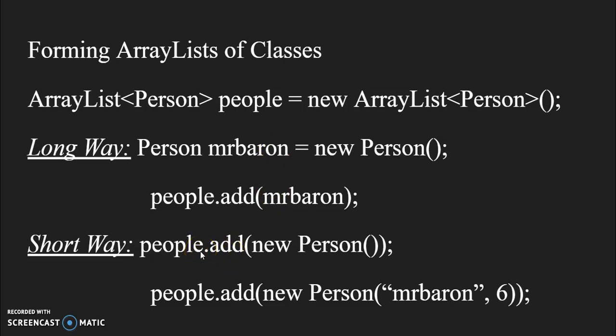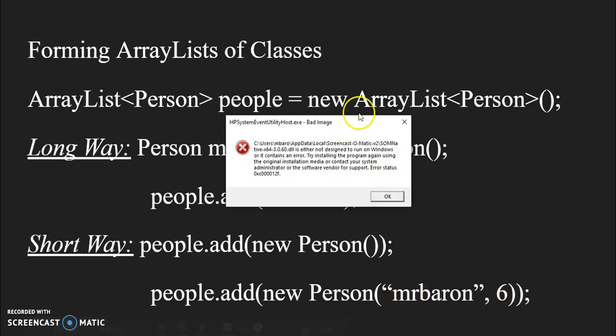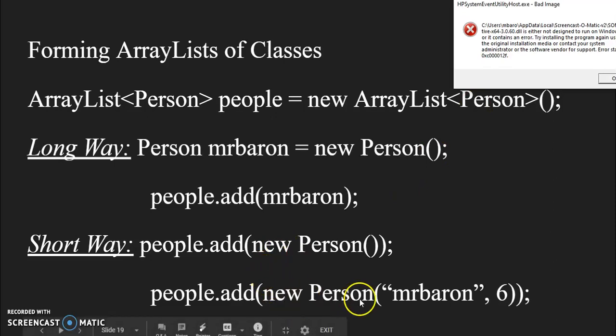The other way to do this is to create an object of that particular class inside of that add method. You can actually call the second half of the constructor inside of the add method just to add in a new person into this value. With a default constructor, you can say people dot add new person. That'll make a new one. Maybe if you just wanted to start out by initializing ArrayList of persons, you could say people dot add new person. If you have a constructor, say that takes two arguments, like Mr. Barron for name and six for height, you can actually put those inside of the constructor here. That you're adding it in as you're creating it. This is what I'm going to refer to as the short way, and this is something that I want you to try to be able to do.